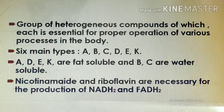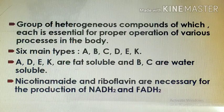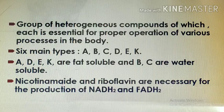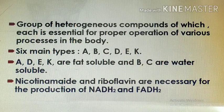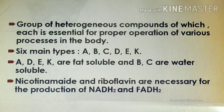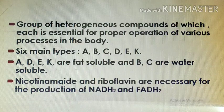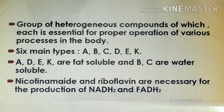Vitamins are nothing but vital amines, necessary for the body. They are a group of heterogeneous compounds essential for the proper operation of various processes in the body. There are mainly six types of vitamins: A, B, C, D, E, and vitamin K. Vitamins A, D, E, and K are fat-soluble vitamins, while B and C vitamins are water-soluble vitamins.